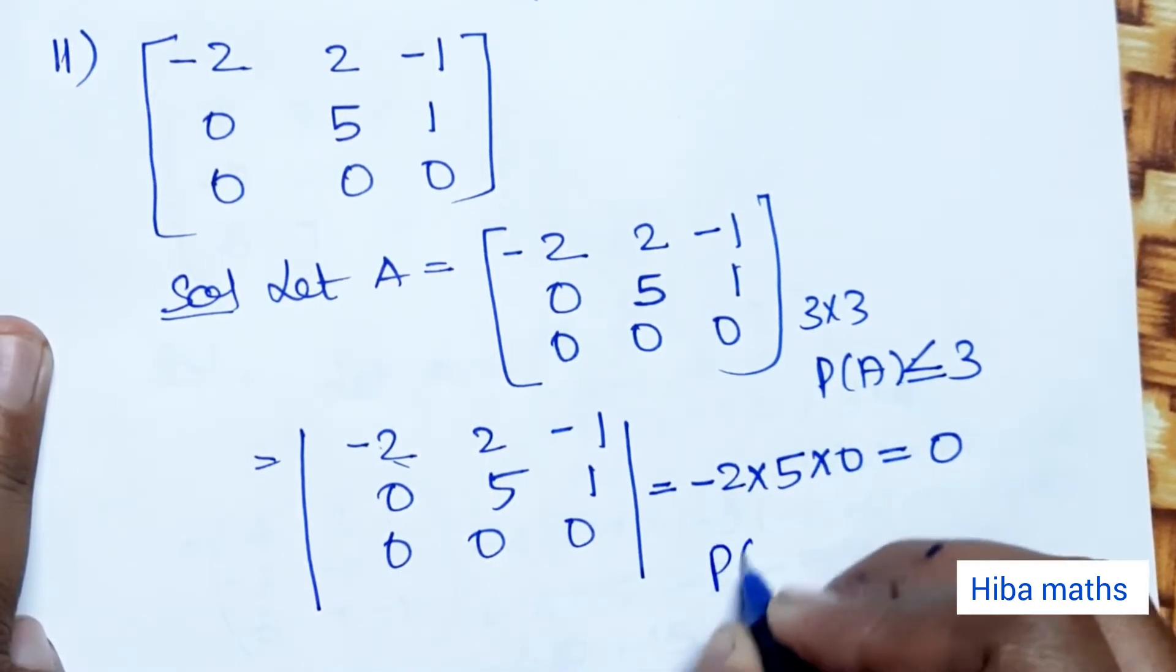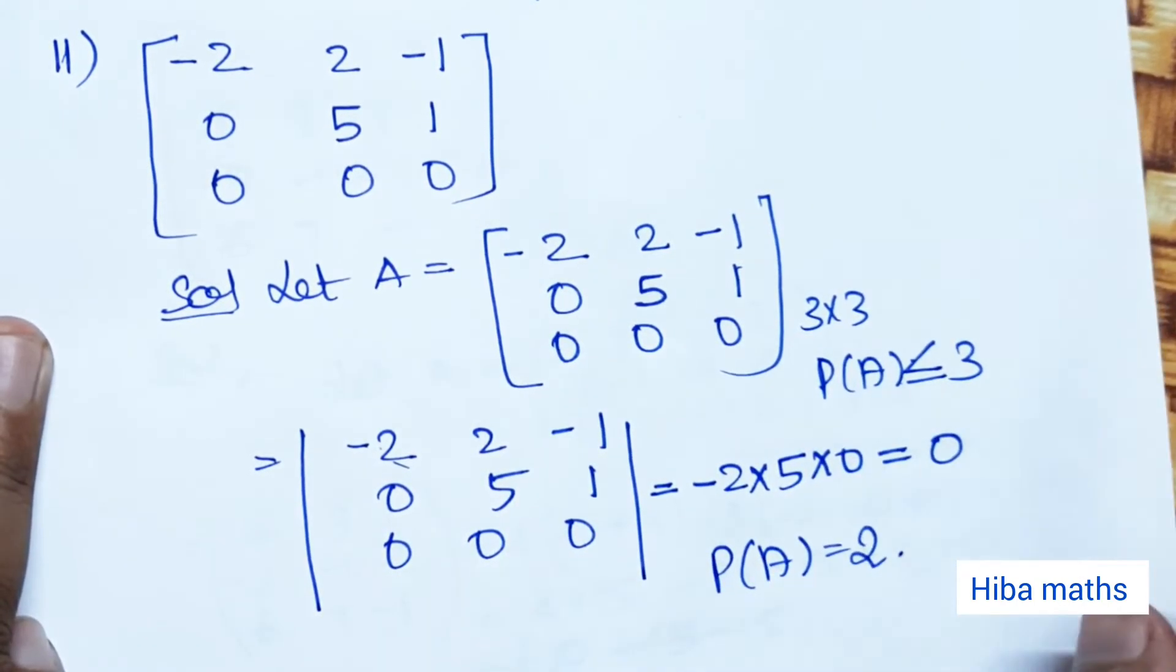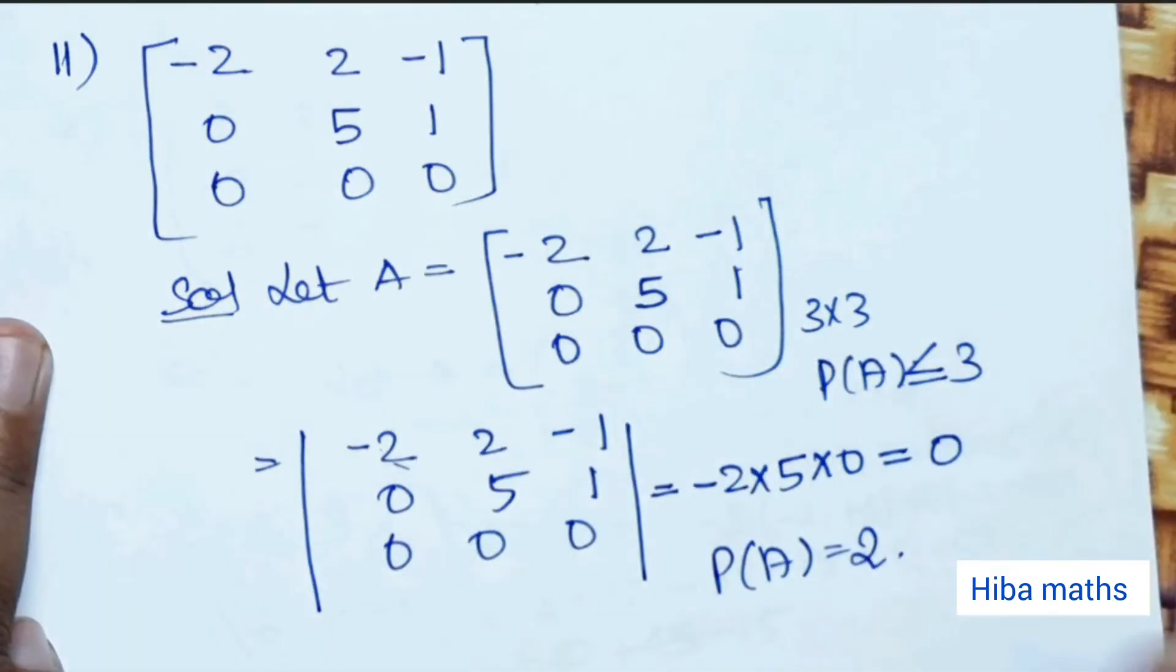The rank of the matrix is 2. Taking the 2 by 2 submatrix [-2,2; 0,5], the determinant is -2 × 5 = -10, which is not equal to 0. Therefore, the rank is 2.